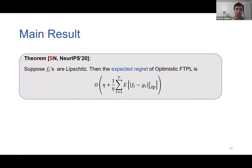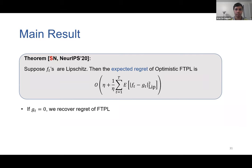Our main result on the regret of OFTPL: suppose the sequence of loss functions ft are Lipschitz and possibly non-convex. The expected regret of optimistic FTPL is bounded by a term that depends only on ft minus gt, which measures the quality of our guess about the future loss function. If gt is zero, by setting noise eta to square root T, we recover the FTPL regret. If gt equals ft — i.e., we predict the future exactly — setting the noise to zero gives zero regret. In general, if ft minus gt is small, we get better than square root T regret.